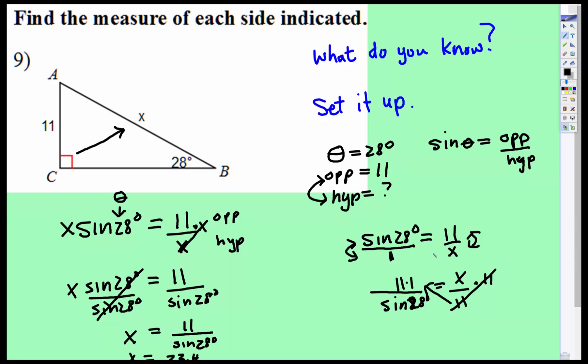I'm going to punch that into my TI-30 really quickly to make sure that's correct. So, 11 divided by sine of 28, 23.4. That's it.